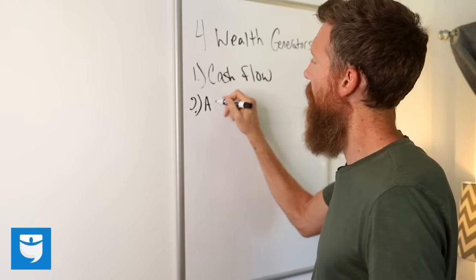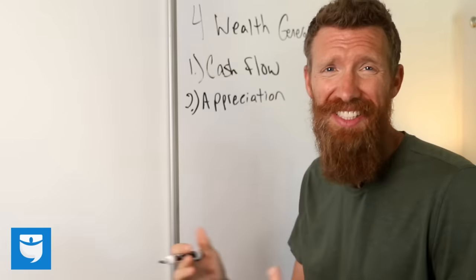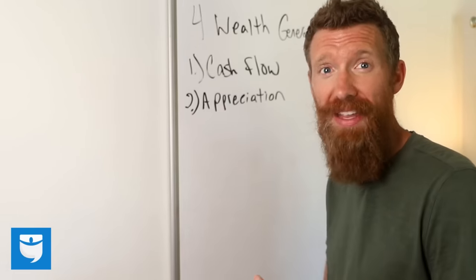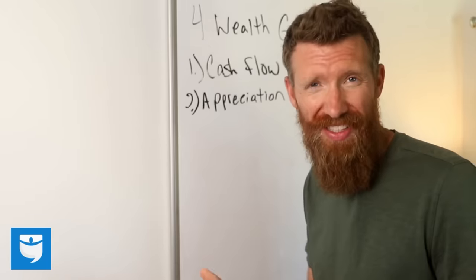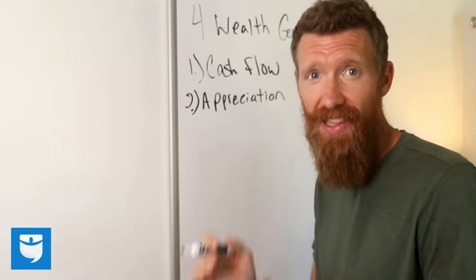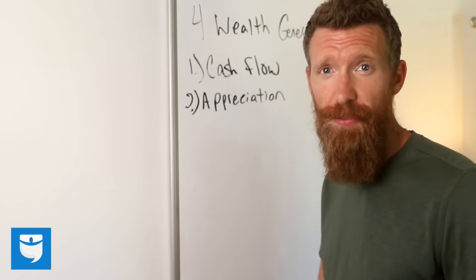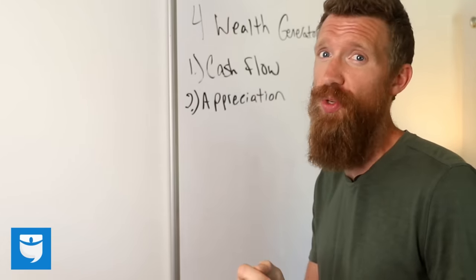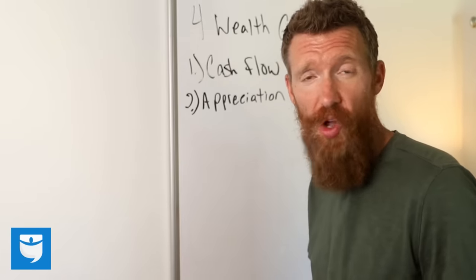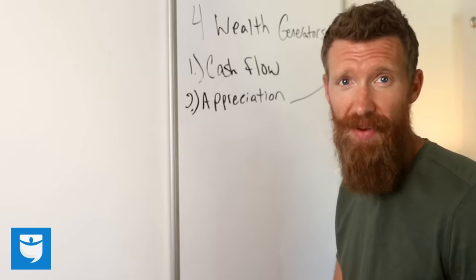Number two, appreciation. This is basically the simple truth that real estate tends to climb over time in value. Now, sure, things like 2008 do happen and prices do drop sometimes a lot, but over time prices tend to climb. As long as you can hold onto a property long enough, you should always see appreciation. And that's why cash flow, which we just talked about a second ago, is so vital, right? Because as long as I'm making cash flow, I can hold onto it as long as I need to waiting for the property to climb in value.